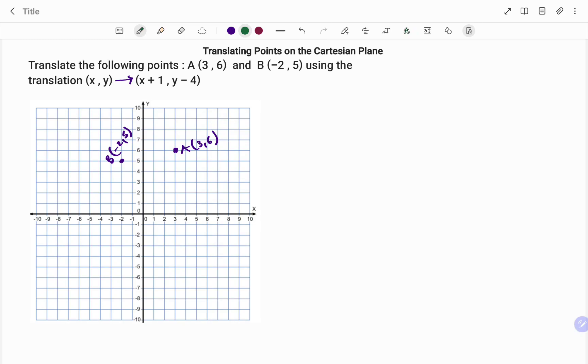Showing you how to calculate the translation, if A is going from (3, 6) to translate A, I have x plus 1, y minus 4. So what I'm going to do is for my x-coordinate, I'm going to add 1, and for my y-coordinate, I'm going to minus 4. So my new point will be x plus 1, that's 3 plus 1, I have 4 for my x-axis, and for my y-axis, I have 6 minus 4, that's 2. So going back to the Cartesian plane, my new point will be (4, 2). That's A prime will be (4, 2).